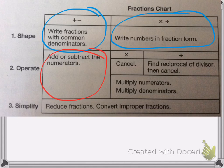Then you need to operate, so that's adding or subtracting numerators if you're adding or subtracting. With multiplying and dividing, you first want to cancel because it's easiest to cancel first. If you're dividing, you need to find the reciprocal and then cancel the numbers, so remember flip and multiply. Then we multiply the numerators and multiply the denominators.